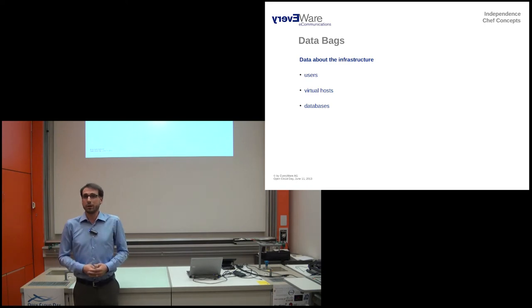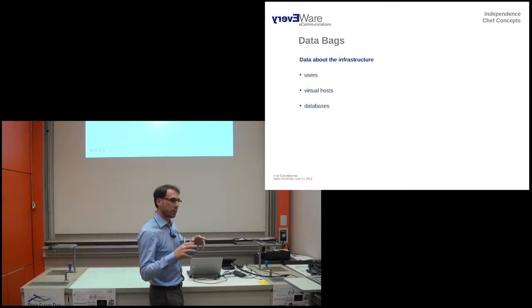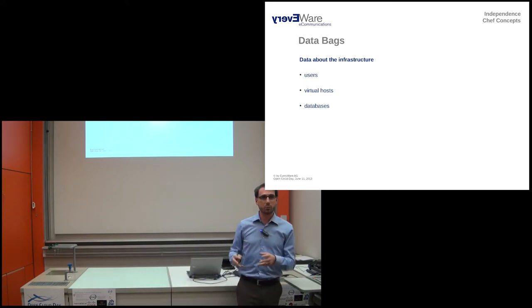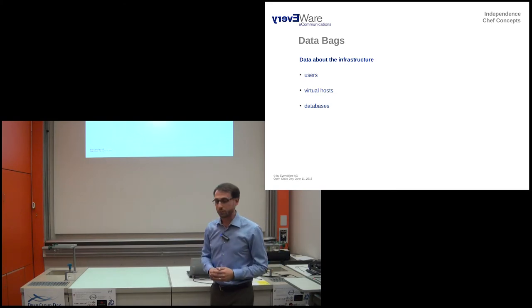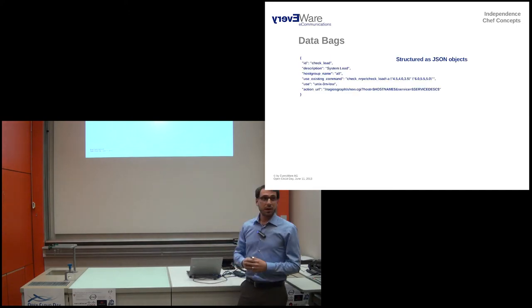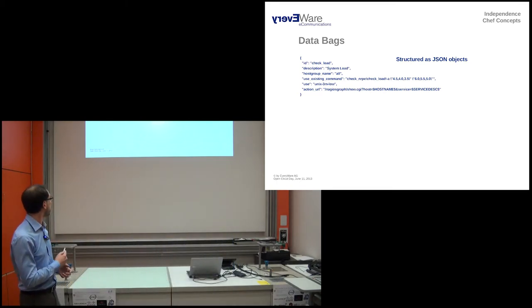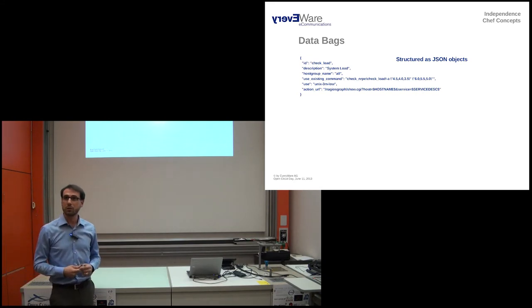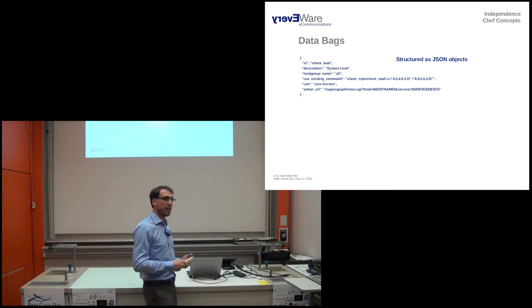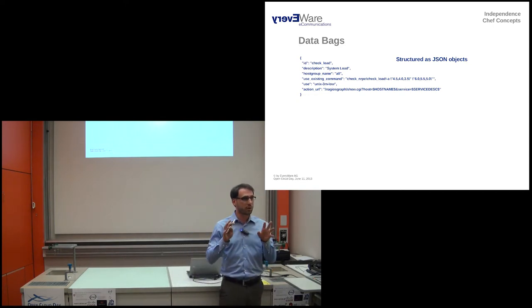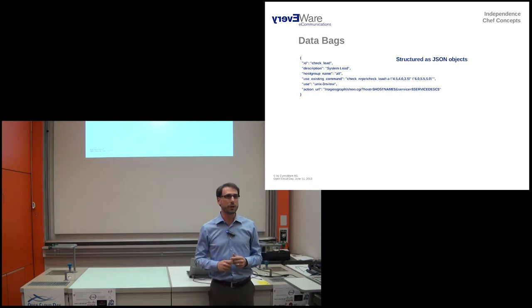The last chef concept that we're going to be going over is data bags. A data bag is basically data. That's all it is. It's just a bunch of data about your infrastructure. You can have virtual hosts in data bags. You can have users. You can have databases. So that you know or you can control which virtual hosts are active on which nodes. Which users should be provisioned on which nodes, etc. This is what a data bag looks like. It's in JSON format, JavaScript object notation. Which basically means that anything between two curly braces is an object. You can nest them. You have a colon to separate the key from the value. Anything in quotes is a string. You can have arrays. You can have hashes as well. So whatever fits your way of thinking about this data, you can construct it in JSON format and use that in your recipes. The recipe takes the data from the data bag and creates something on that server.